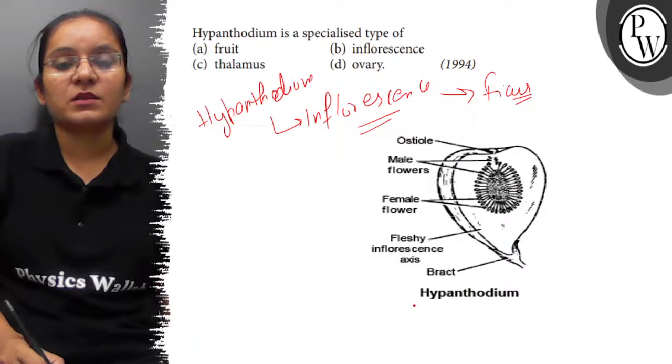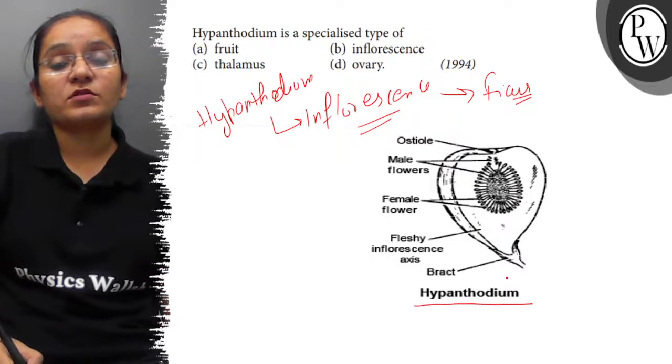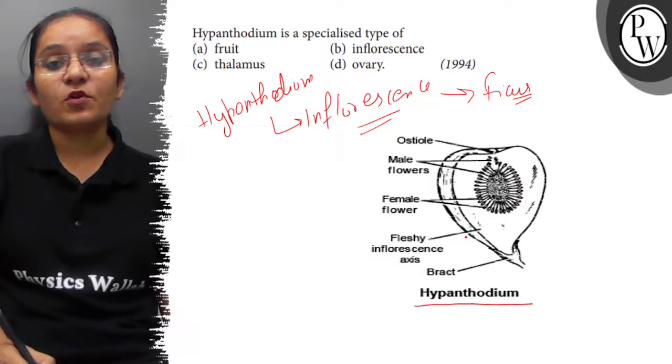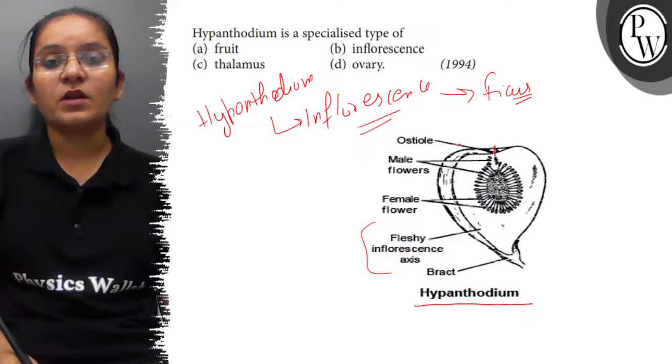Hypanthodium inflorescence found in ficus is a fleshy inflorescence, and it is opened through an opening called osteo.